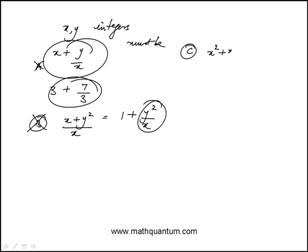C is x square plus xy over x. Divide each term by x. This becomes x plus y. And this is an integer for all values of x and y because both x and y are integers. So the answer is C.